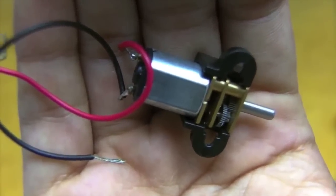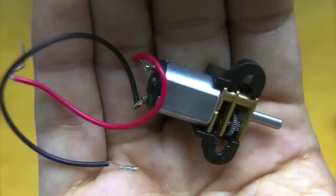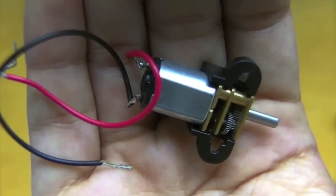A simple brushed motor like this consists of four parts: the stator, the rotor, the commutator, and the brushes.